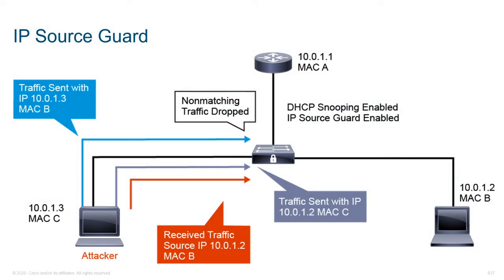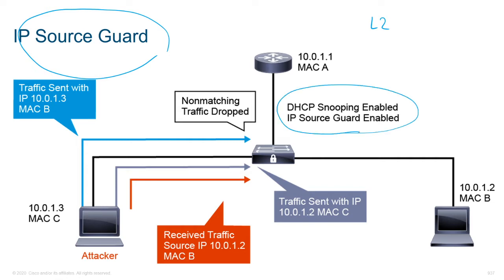Next is IP Source Guard. This is often discussed alongside the DHCP snooping section, but because DHCP snooping is more of a layer two protocol and IP Source Guard is more geared towards layer three, it was placed in the layer three section. It does need DHCP snooping enabled first, and then we enable IP Source Guard. Remember with DHCP snooping, all ports were untrusted, and administrators had to go in and provision the trusted ports.